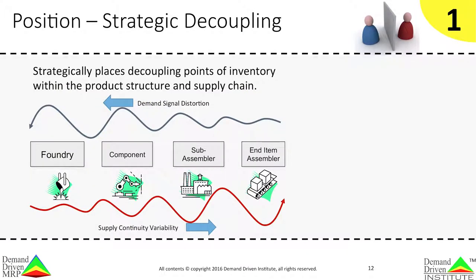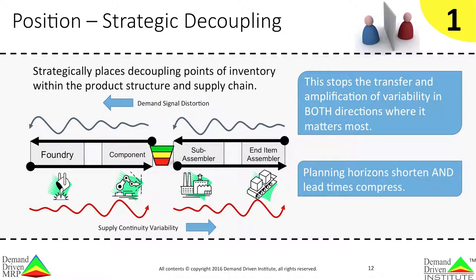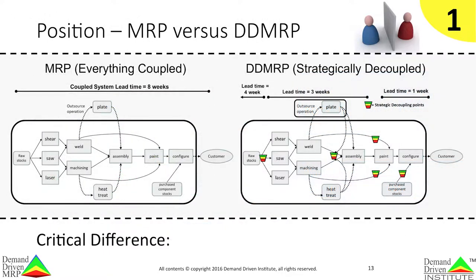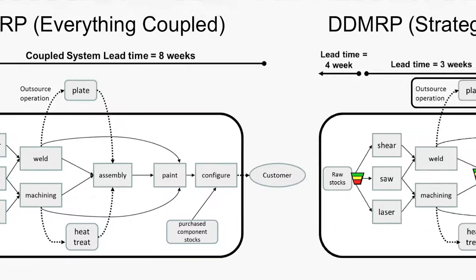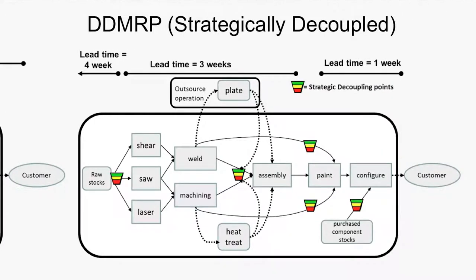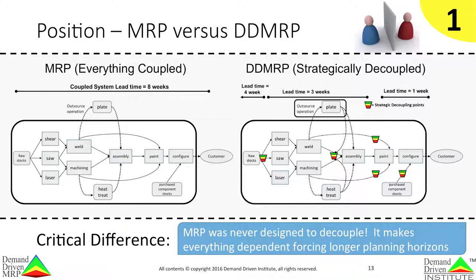DDMRP strategically places decoupling points of inventory within the product structure and supply chain. These points are carefully selected through a variety of factors. This placement stops the transfer and amplification of variability in both directions at these strategic points. Planning horizons shorten and lead times compress immediately. On the left, MRP couples every activity together, producing a longer planned lead time, meaning date and quantity changes in one thing affect everything. On the right, a DDMRP design uses decoupling points to create shorter, independent planning horizons that stop the cascading effect of changes at critical areas. The market lead time has been compressed to one week. The critical difference is that MRP was never designed to decouple — it makes everything dependent, forcing longer planning horizons and introducing massive amounts of system nervousness.